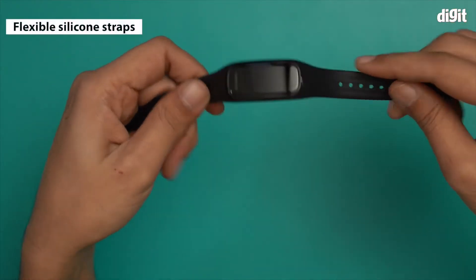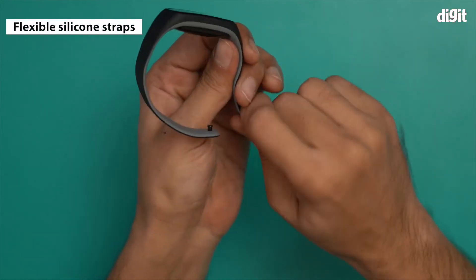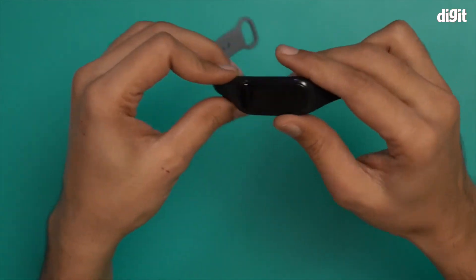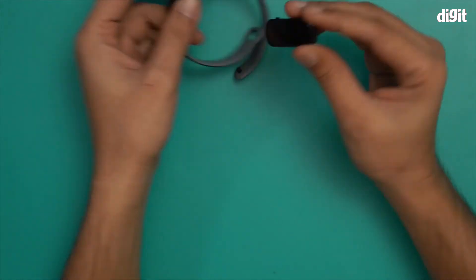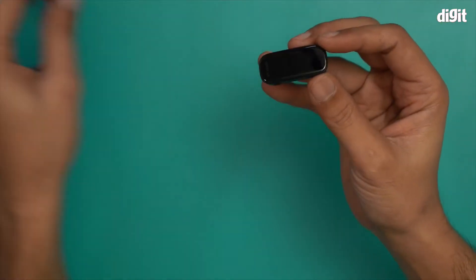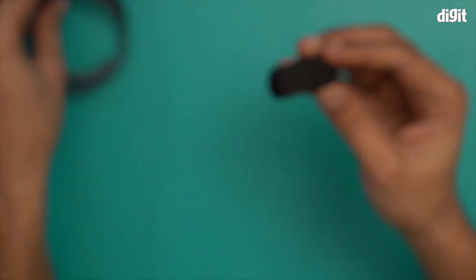These are the silicone straps. They are very flexible and durable. The entire body is silicone except the tracking unit which is this one. It's very easy to remove the tracking unit. You just push it from the top and it comes out.